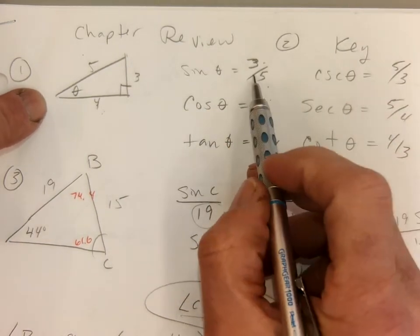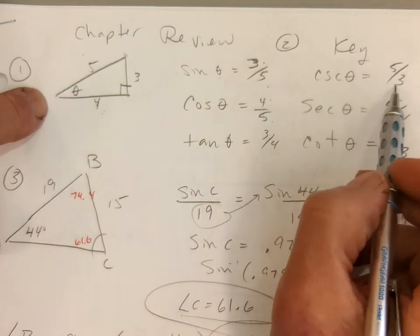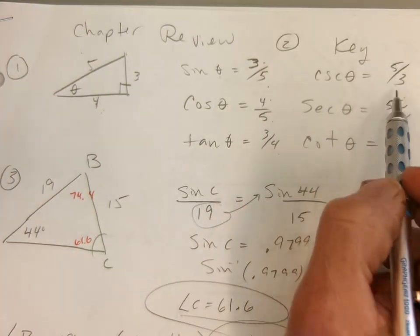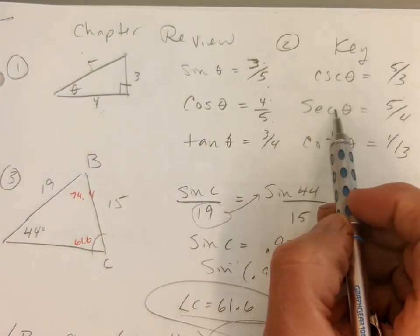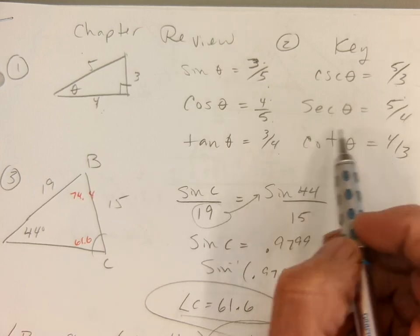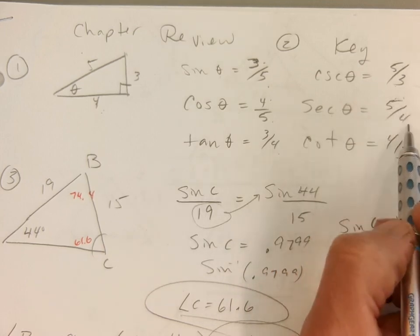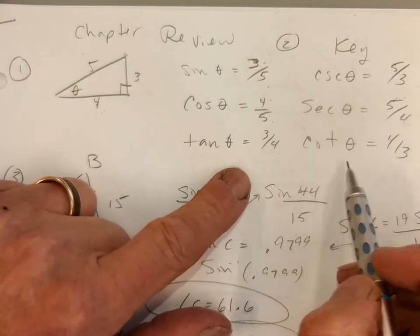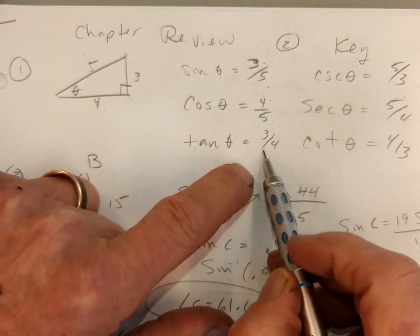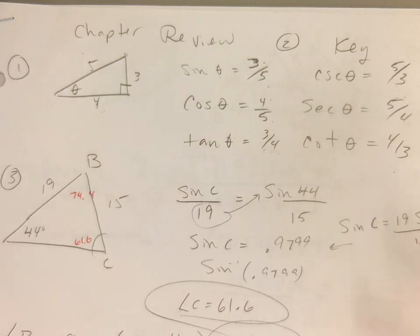Cosecant is just the reciprocal of sine, so instead of 3 fifths it's 5 thirds. Secant is the reciprocal of cosine, so it's 5 fourths. And cotangent is the reciprocal of tangent, so it's 4 thirds. That's it.